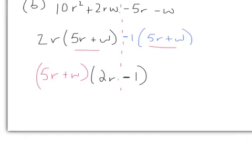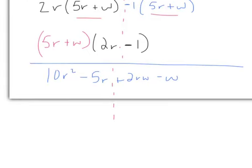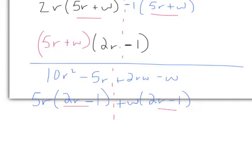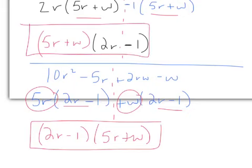Alternate solution: reorder the terms as 10r² minus 5r plus 2rw minus w. Put the dashed line down the middle. On the left, 5 and r come out, leaving 2r minus 1. On the right, w comes out, leaving 2r minus 1. Since 2r minus 1 is common, factor it out, leaving 5r plus w. The answer is (2r minus 1)(5r plus w), which is the same as before — just in a different order. Multiplication is commutative.